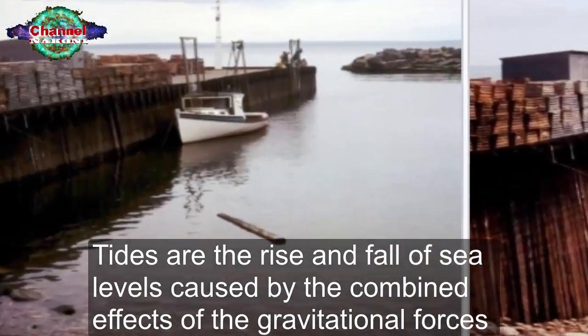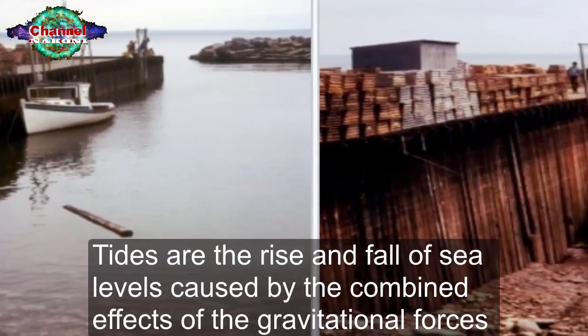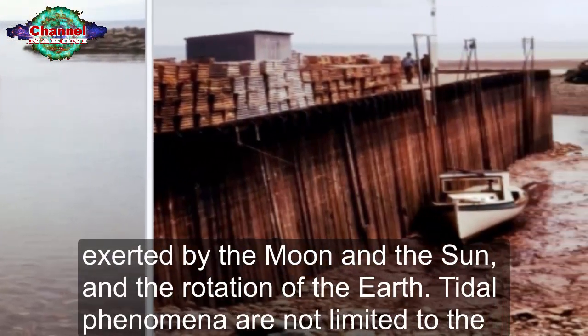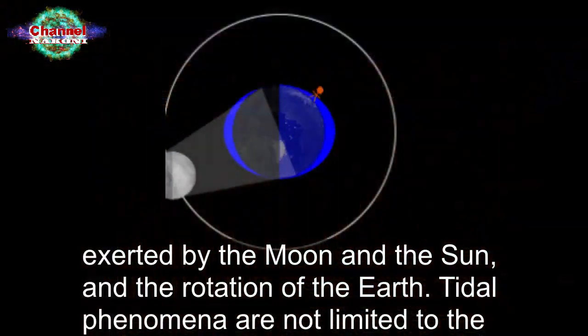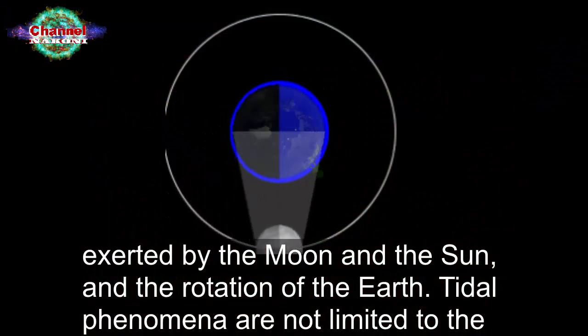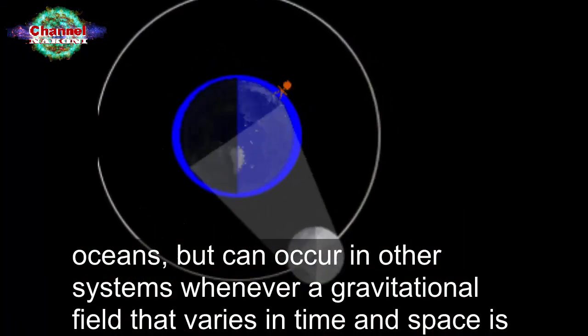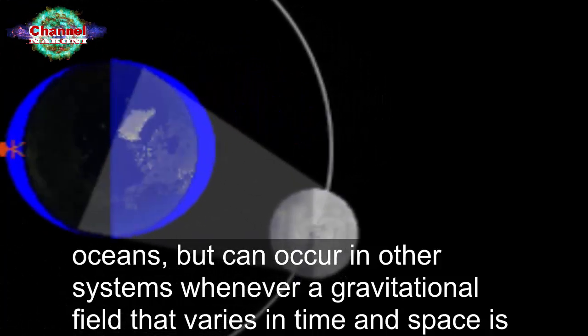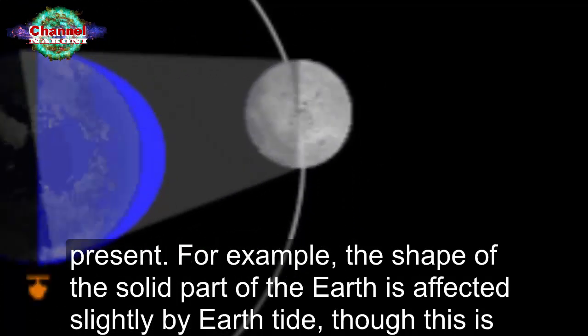Tides are the rise and fall of sea levels caused by the combined effects of gravitational forces exerted by the moon and the sun, and the rotation of the earth. Tidal phenomena are not limited to the oceans but can occur in other systems whenever a gravitational field that varies in time and space is present.